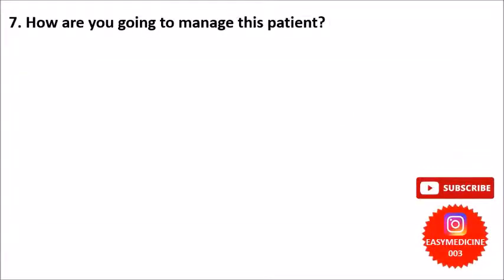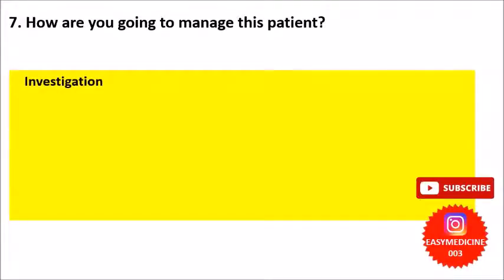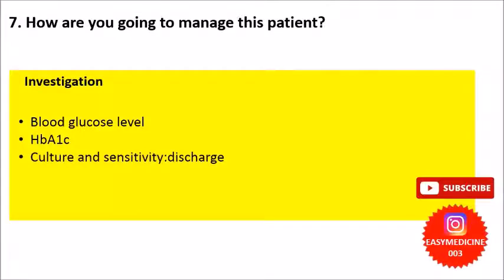The last question was how to manage this patient. For management, we shall start with investigations first. As this patient is diabetic, we will check blood glucose level and order HbA1c to assess diabetic control. For the ear condition, we can ask for culture and sensitivity of the discharge, a CT scan to check if bony structures are involved, and a gallium-67 test to diagnose the condition and monitor follow-up.